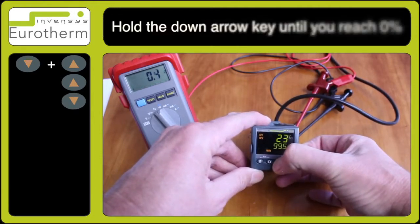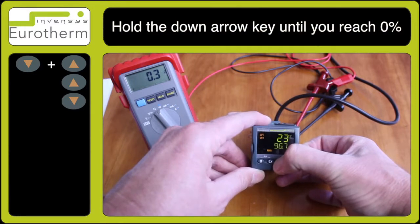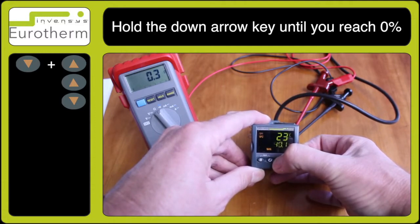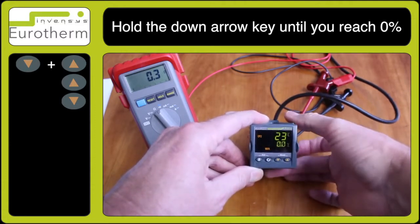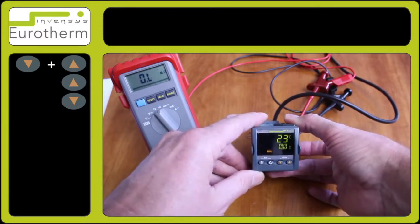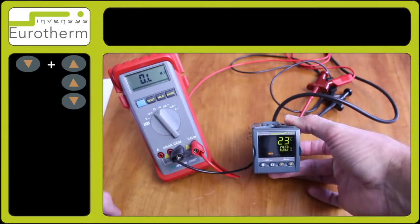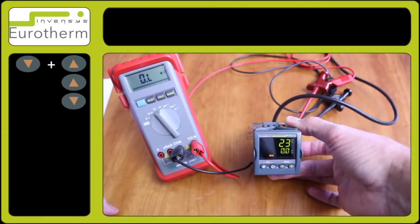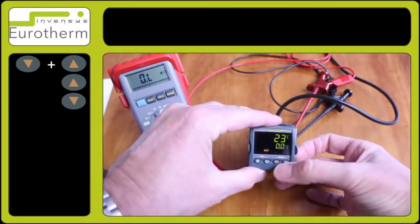Using the down arrow key we can ramp down to 0% like so. Once that's entered the relay will now switch over and my multimeter has now gone to open circuit. So that is how you test the relay output.